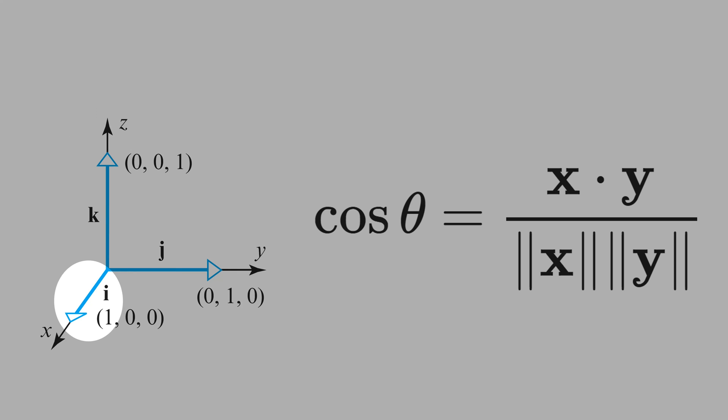We say that the vectors i, j and k are linearly independent. That means whatever vector that you draw in this three-dimensional space can be expressed as a linear combination of i, j and k.